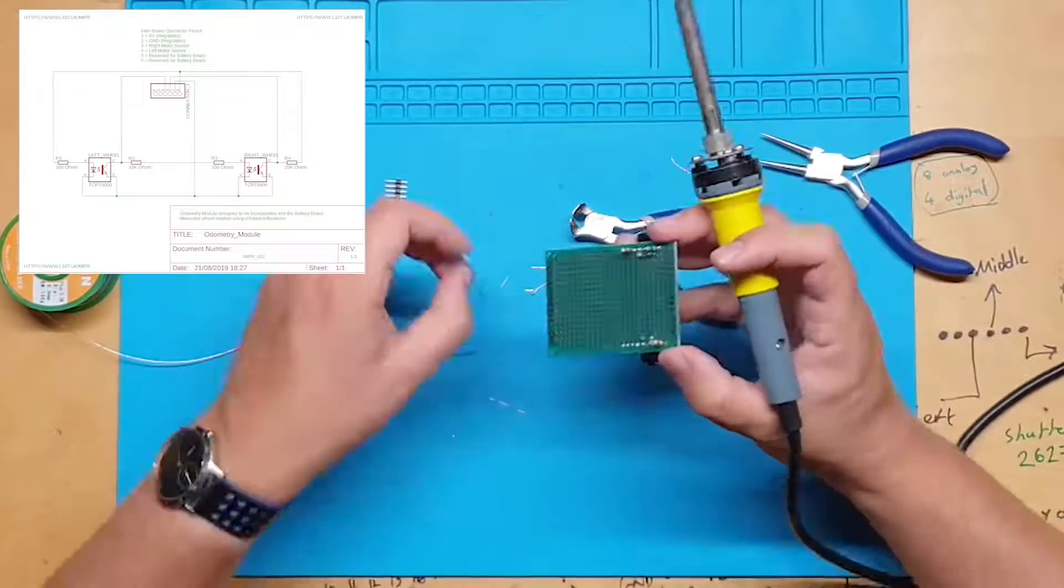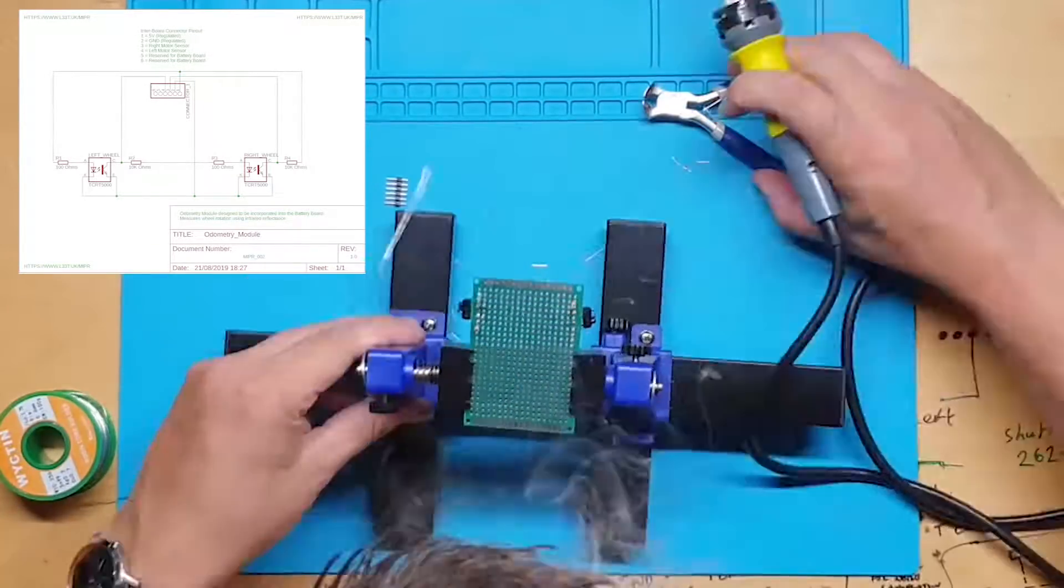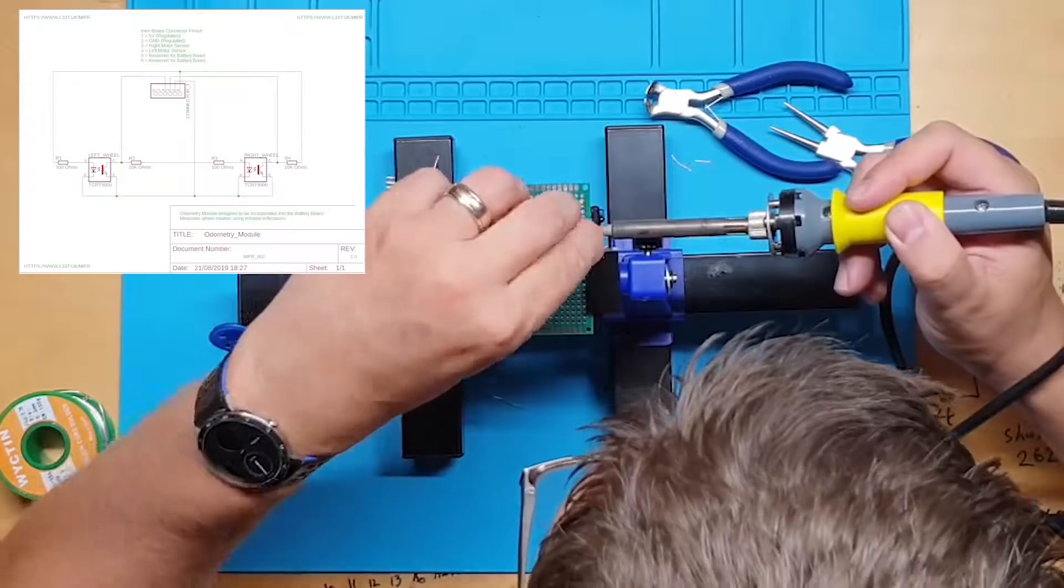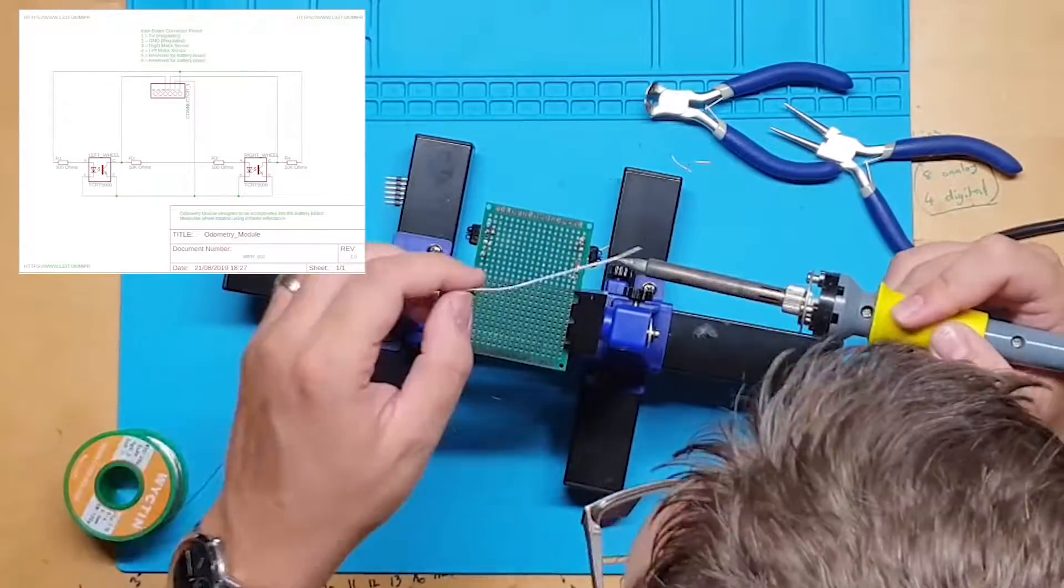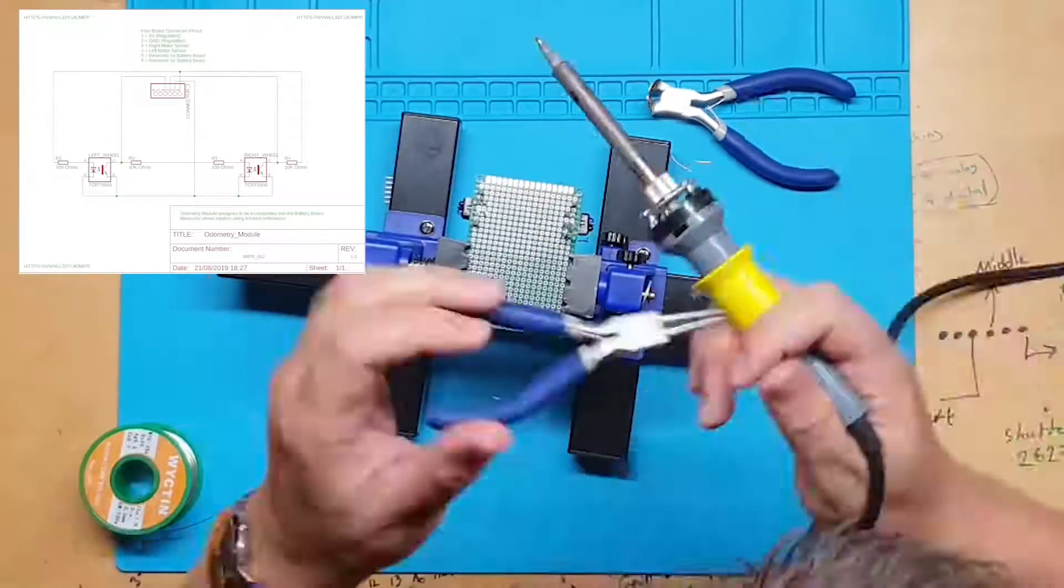I will add the resistors next. A 100 ohm current limiting resistor ensuring that no more than 50 milliamps will be supplied to the infrared diode. If we gave the diode more current it will burn out.